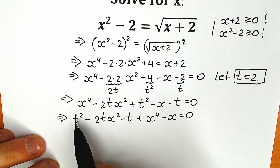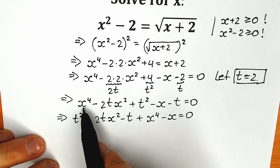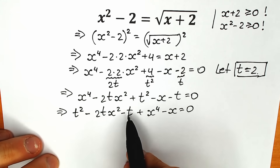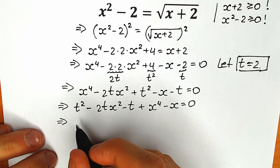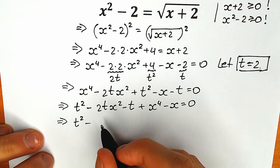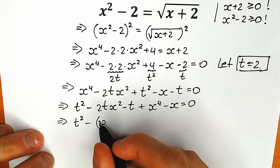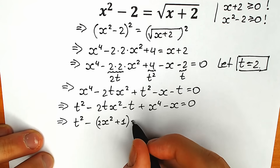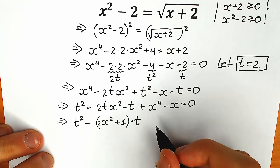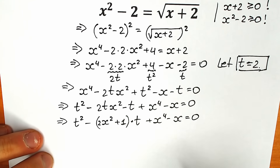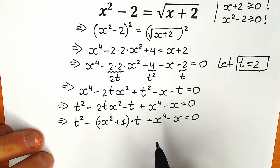Right now we have a quadratic equation in terms of t. It is a fourth-degree equation in terms of x, but a quadratic equation in terms of t. We're going to factor it. As a result we have: t squared, minus the quantity 2x² plus 1, times t, plus x to the fourth power minus x, equal to zero. This is a quadratic in t — this is our a, b, and c.